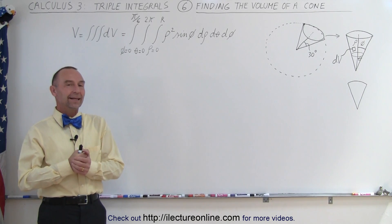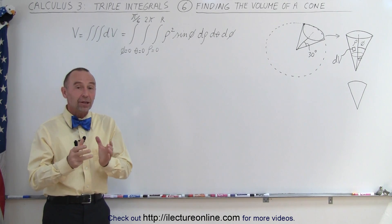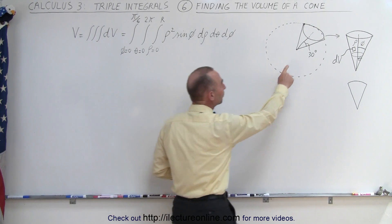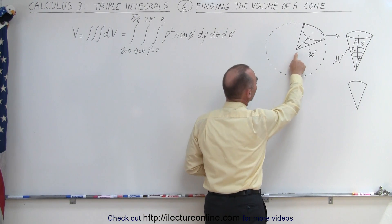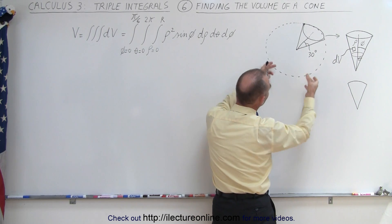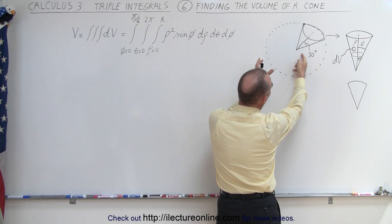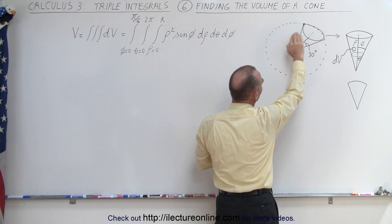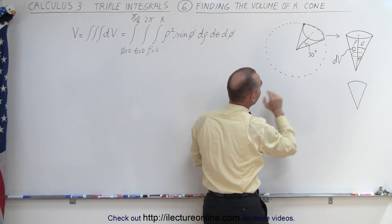Welcome to our lecture online. Now let's try to find the volume of a cone — the cone made of the portion of a sphere. Notice what we do here is we start at the center and we'll go radially outward in all directions at some angle, let's say 30 degrees, and of course the top is going to be part of the surface of the sphere.